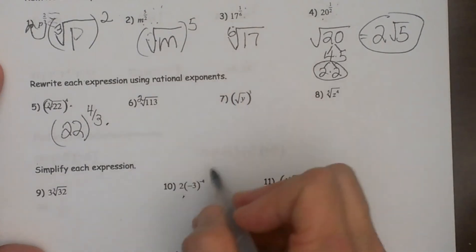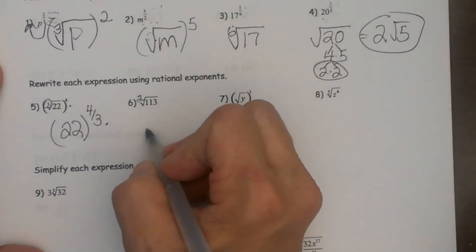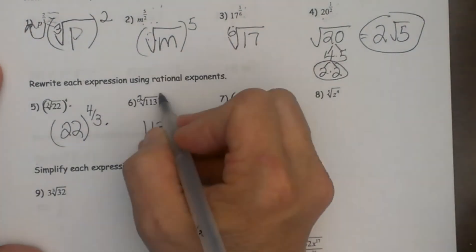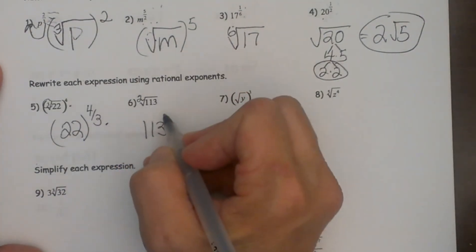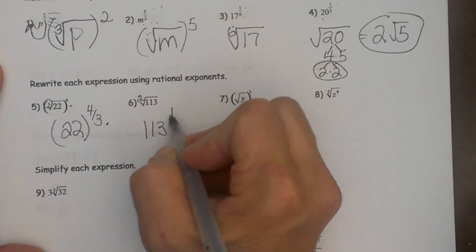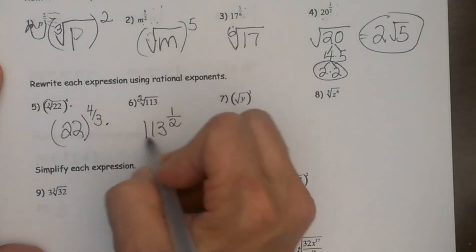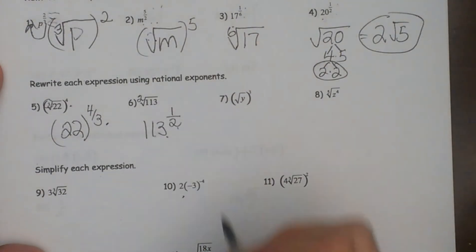So it is going to be one hundred and thirteen but to what power? Well we don't have one thirteen raised to a power so we assume that it is a one and then we bring the root down to the bottom so it is thirteen to the one half. So anything to the one half power just means a square root.